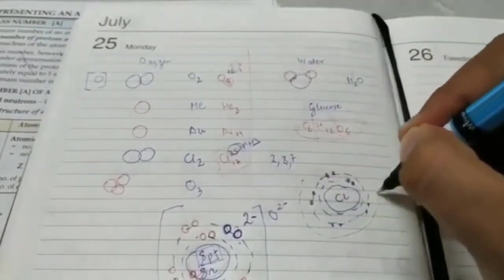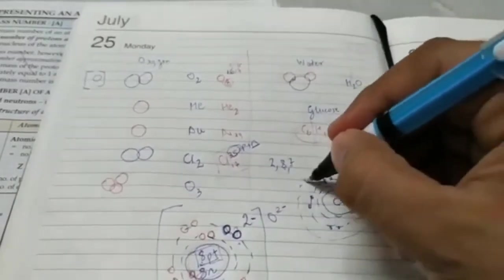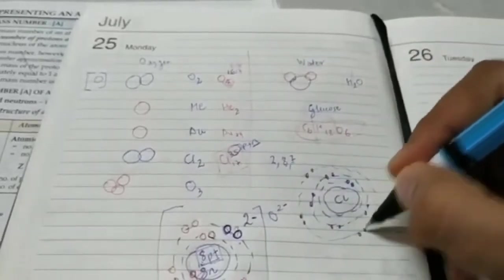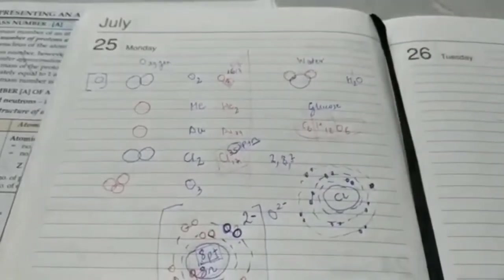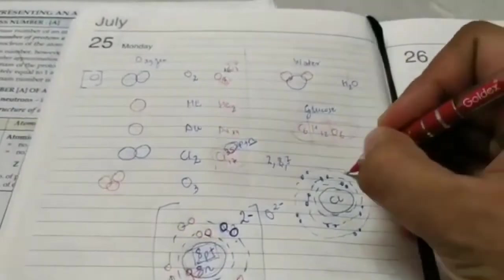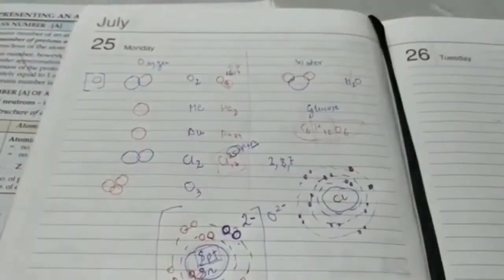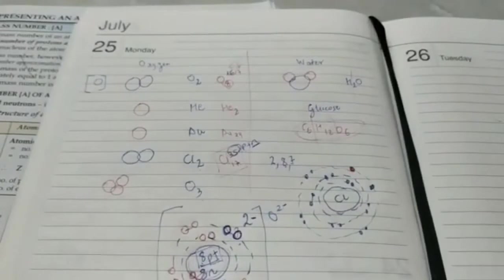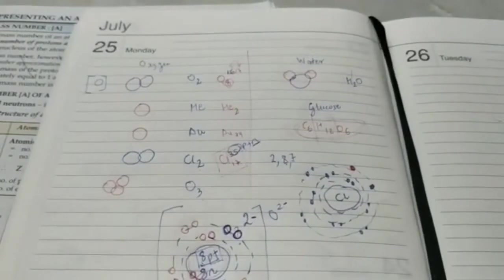And the third shell will have 7 electrons. So its last shell is again incomplete. It needs one more electron to become stable, which it can get by either gaining an electron from some metal or sharing an electron with some non-metal. That is why we say valency of chlorine is 1.